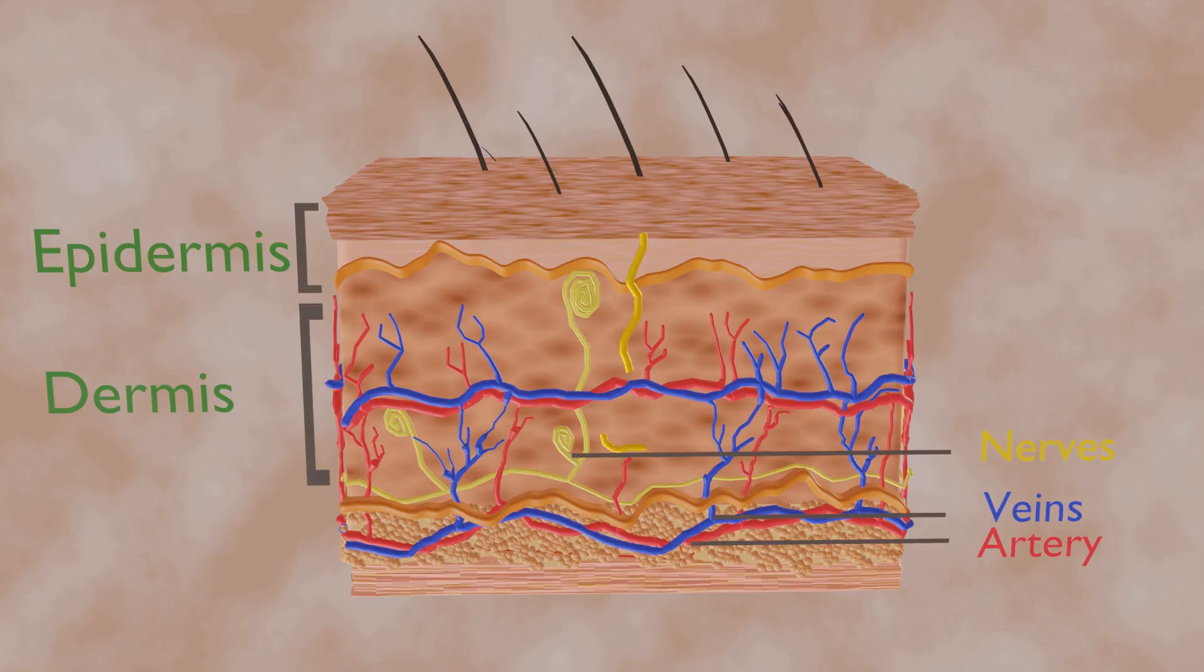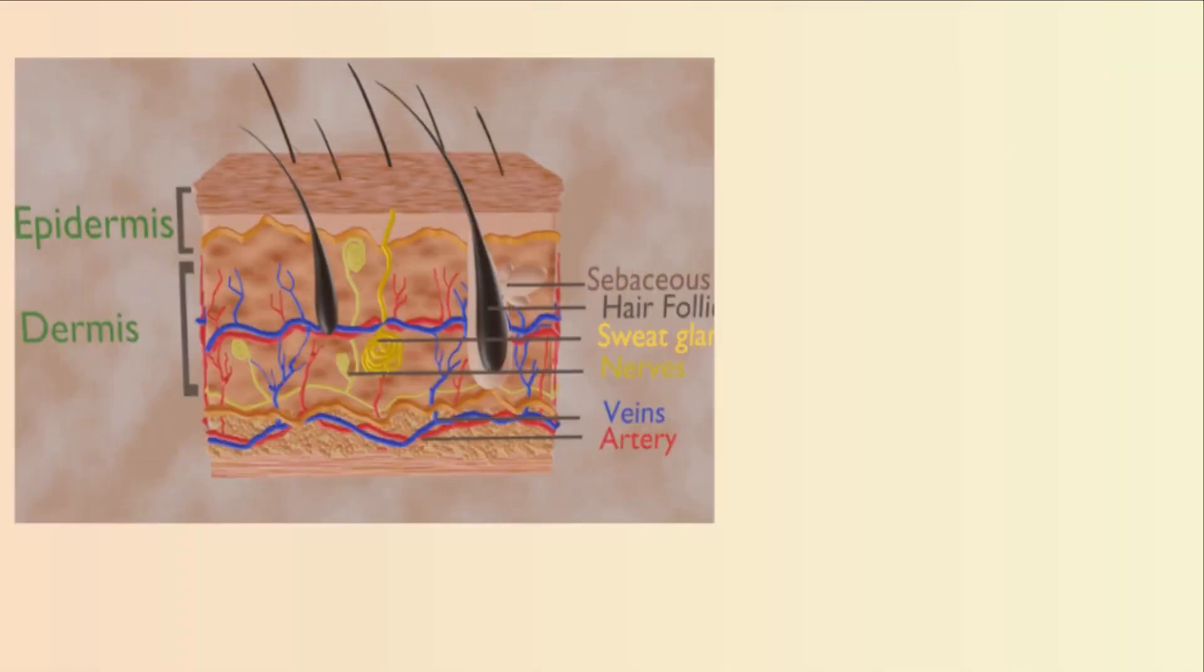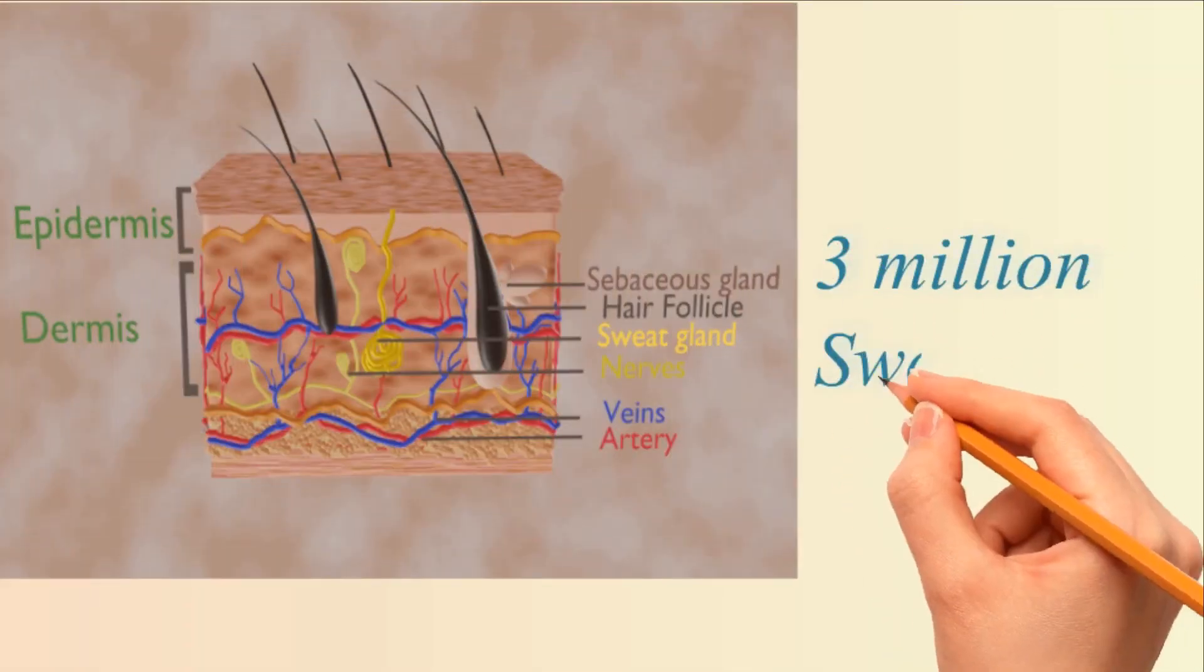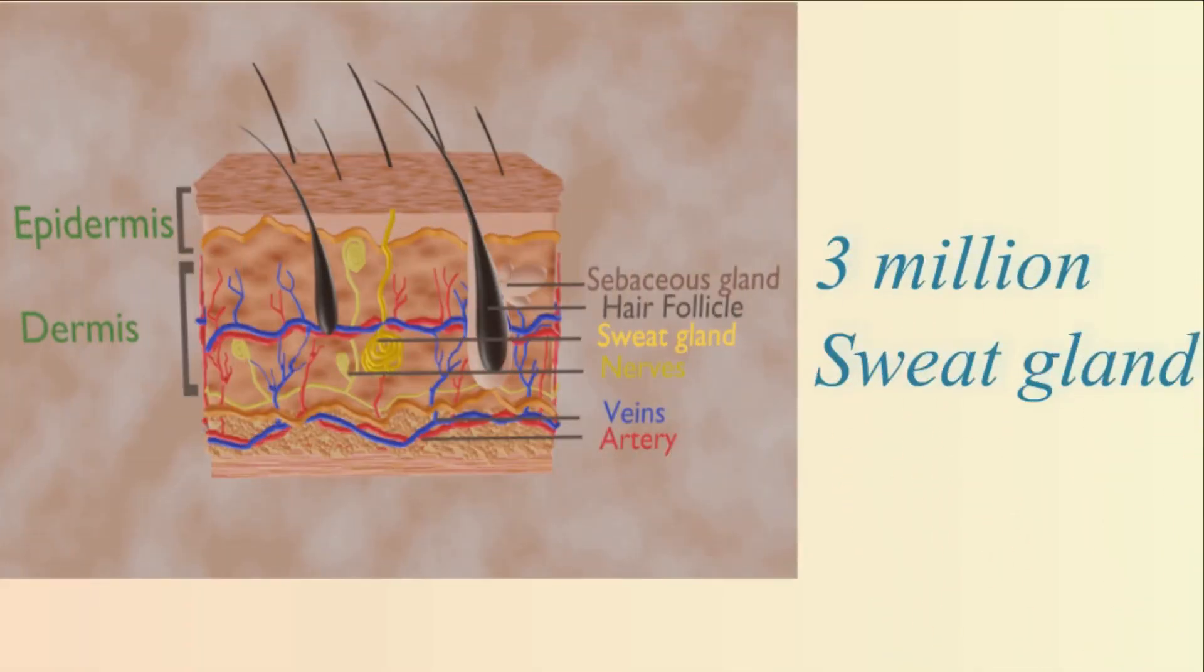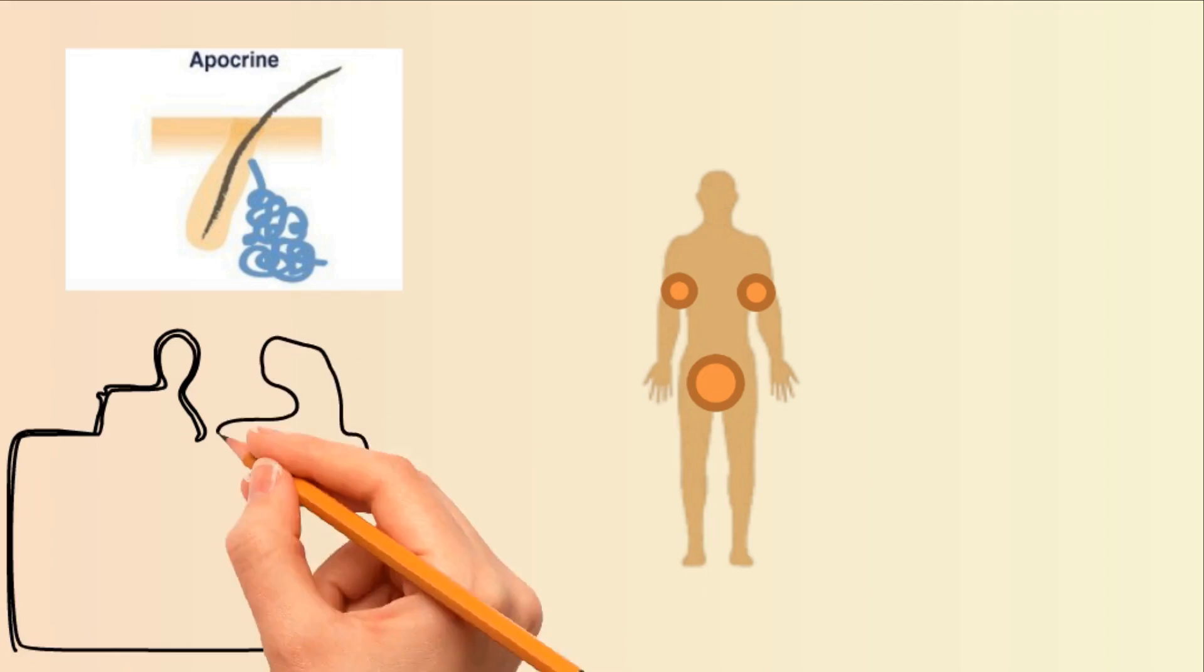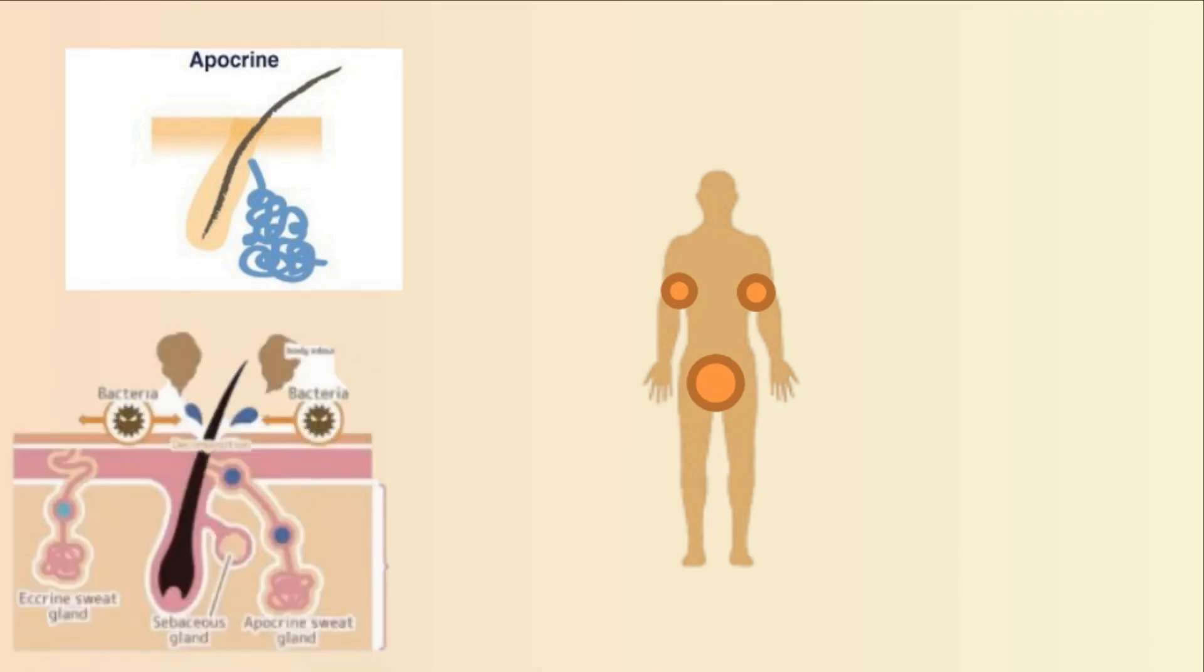The average person has about 3 million sweat glands. Sweat glands are classified according to two types. Apocrine glands are specialized sweat glands that can be found only in the armpits and pubic region. These glands secrete a milky sweat that encourages the growth of the bacteria responsible for body odor.